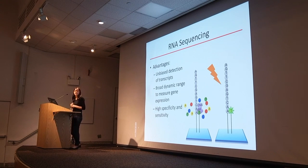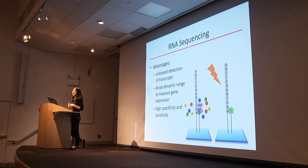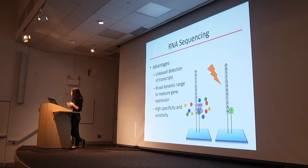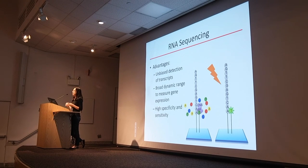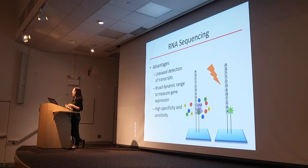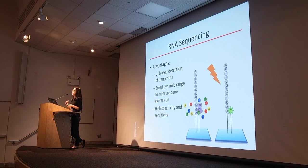What actually happens in the sequencing machine is that cDNA fragments reverse transcribed from RNA are annealed to slides. They're then flooded with DNA polymerase and nucleotides. The nucleotides are fluorescently labeled with a color corresponding to the base. As nucleotides are added one after another, the machine takes an image after each one, identifies the color to determine which nucleotide was added, and reads out the sequence.